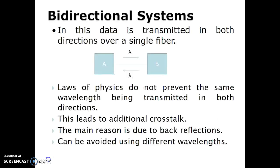Bidirectional system: data is transmitted in both directions over a single fiber. Here, lambda-i and lambda-j show the forward direction and backward direction of the wavelength respectively. The laws of physics do not prevent the same wavelength from being transmitted in both directions. This leads to additional crosstalk; the main reason is back reflections. This can be avoided by using different wavelengths.